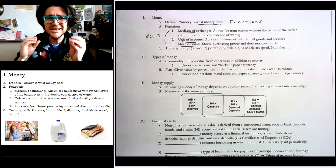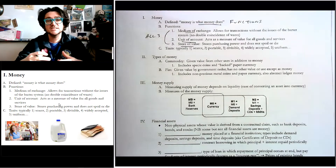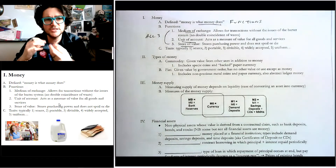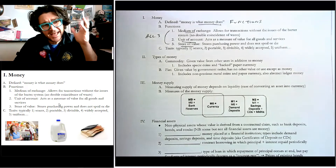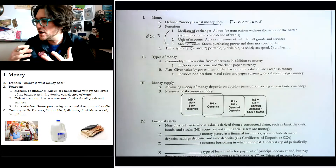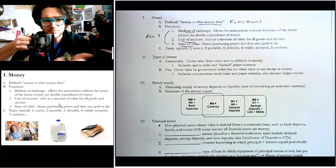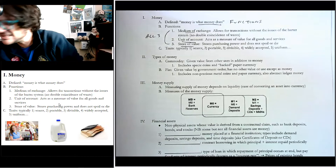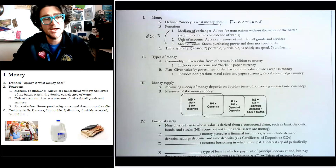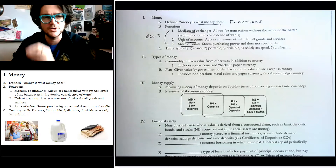Number two, you need money that functions as a unit of account. Just like we have kilograms or kilometers to measure mass or distance, we have dollars to measure value. You can quickly look at a gallon of milk and know it costs around $3 to $4, or a cup of coffee at Starbucks is probably about $3. So you can judge the value of things using money as a unit of account — you don't even necessarily have to buy it.